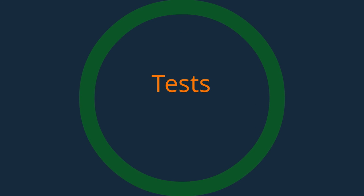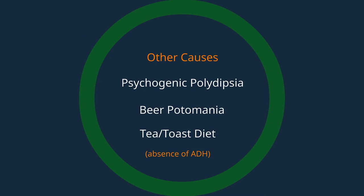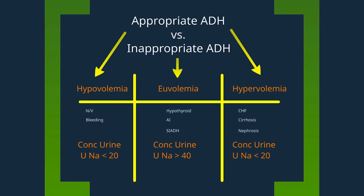Let's talk about the tests now: urinalysis and urine sodium. These two tests will help you figure out what is causing the hyponatremia. If the patient has a dilute urine or a low specific gravity, that would suggest the absence of ADH and the presence of one of the three causes defined here. If the patient has concentrated urine or an elevated specific gravity, that would suggest the presence of ADH.